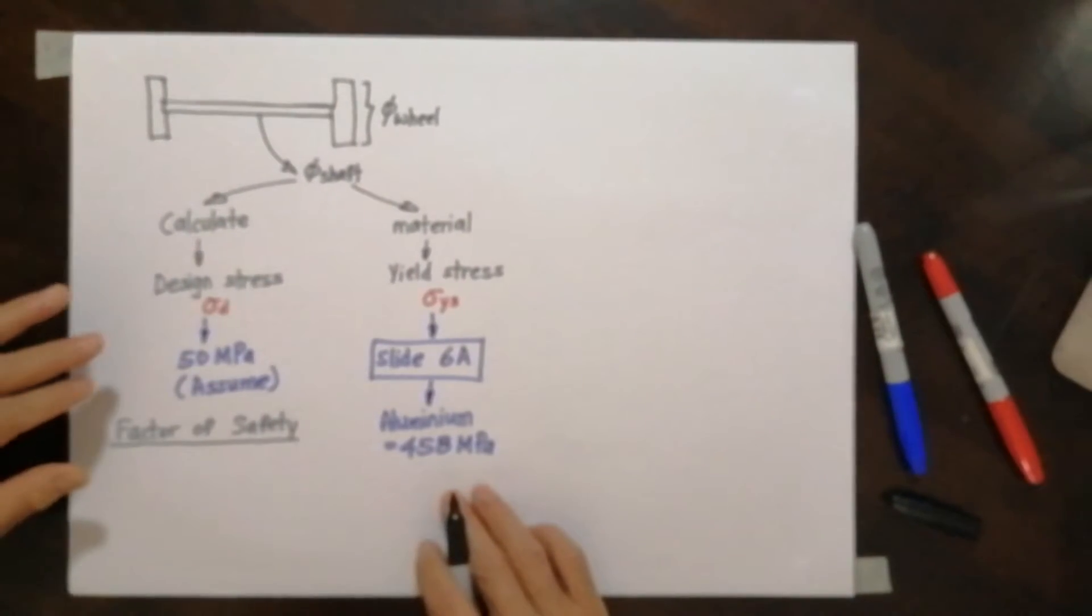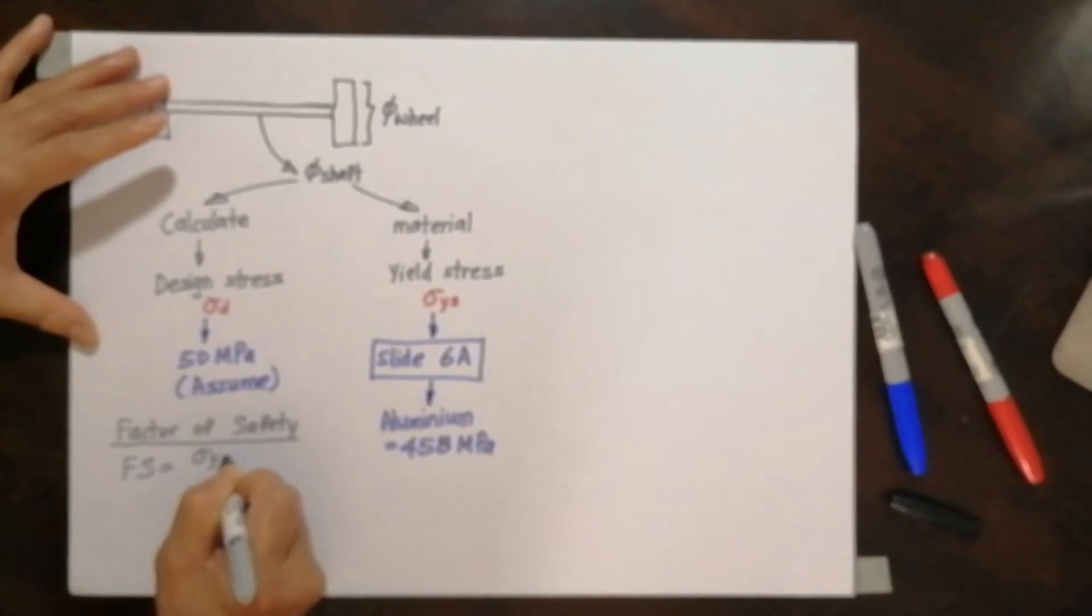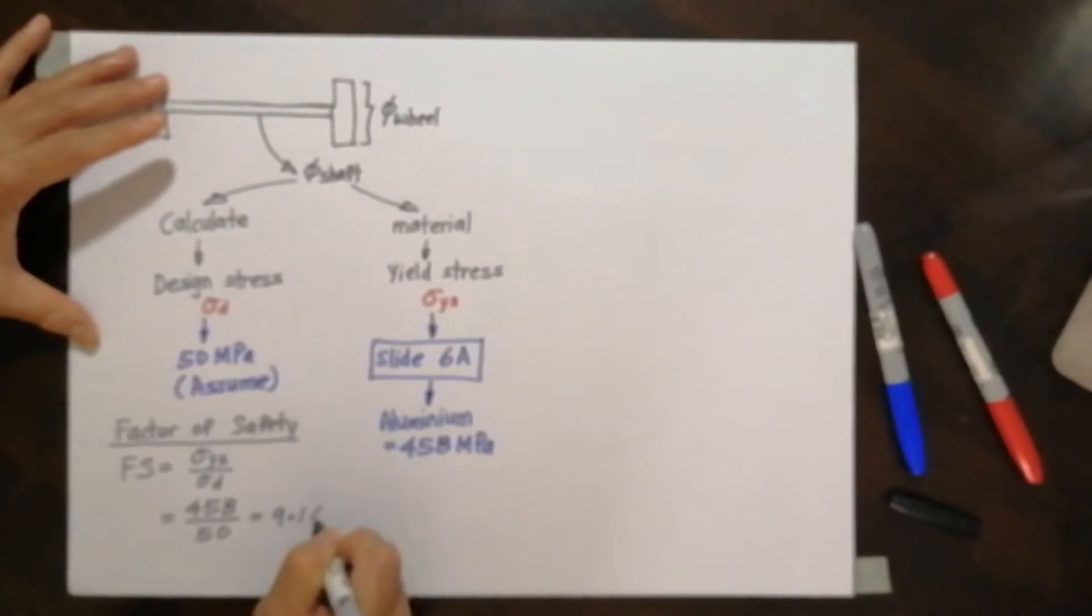Just like this is the amount of money you have and this is the amount of money you're going to spend. So factor of safety, I call it FS, has to be yield stress over design stress. In this case I will have 458 over 50, and using the calculator I'll get a value of 9.16.